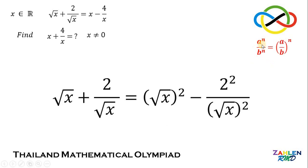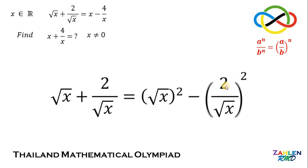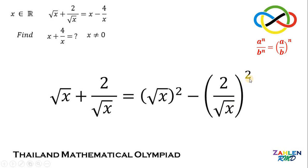If we have a raised to n over b raised to n — different bases but the same exponent — it is equivalent to a over b, raised to the power of n. On our given, we have different bases but the same exponent. Therefore, this can be written as 2 over square root of x, quantity squared. Now we have square root of x, quantity squared, minus 2 over square root of x, quantity squared. At this point, we will use the difference of two squares.